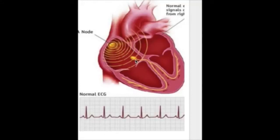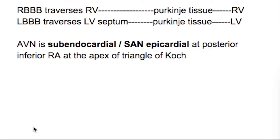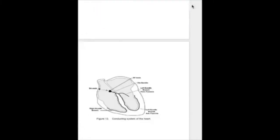The AV node is located at the interatrial septum. Its position is sub-endocardial, at the posterior inferior right atrium at the apex of the triangle of Koch. This is unlike the SA node, which is epicardial — in the upper posterior wall of the right atrium below the superior vena cava.